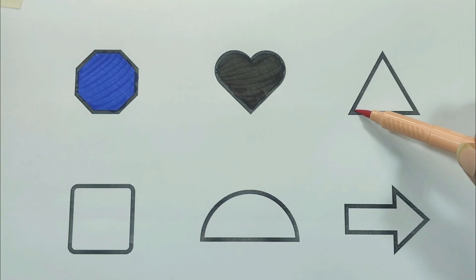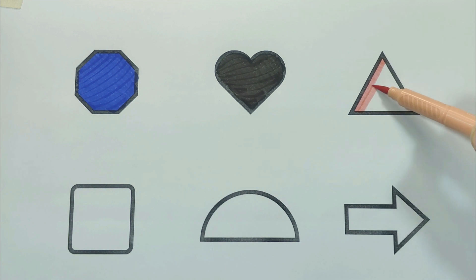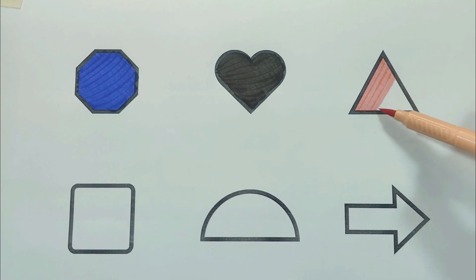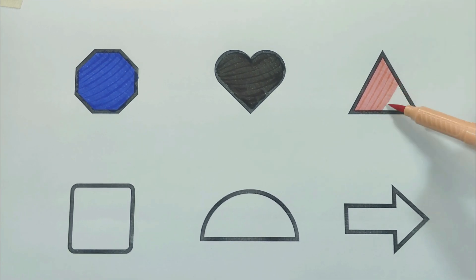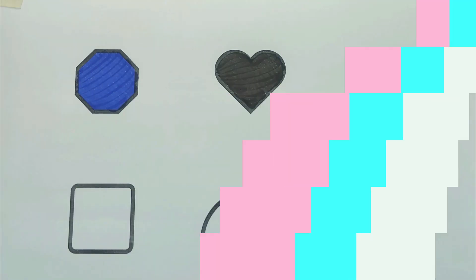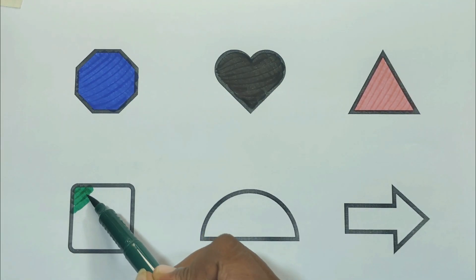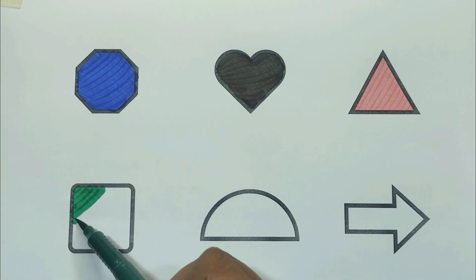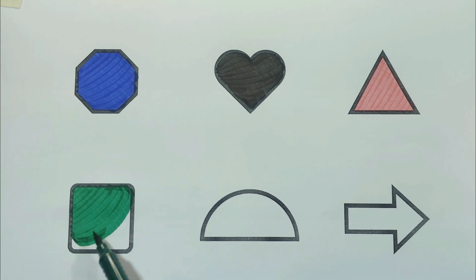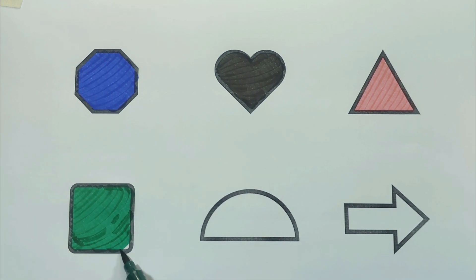Peach color, peach color triangle. The shape is peach color triangle. Green color, green color square. The shape is green color square.